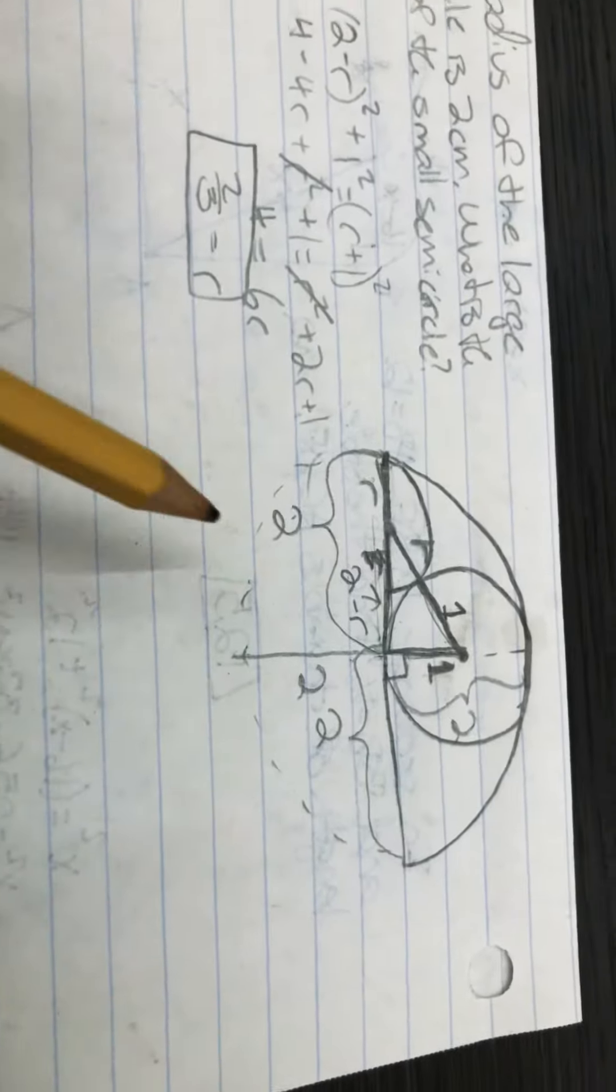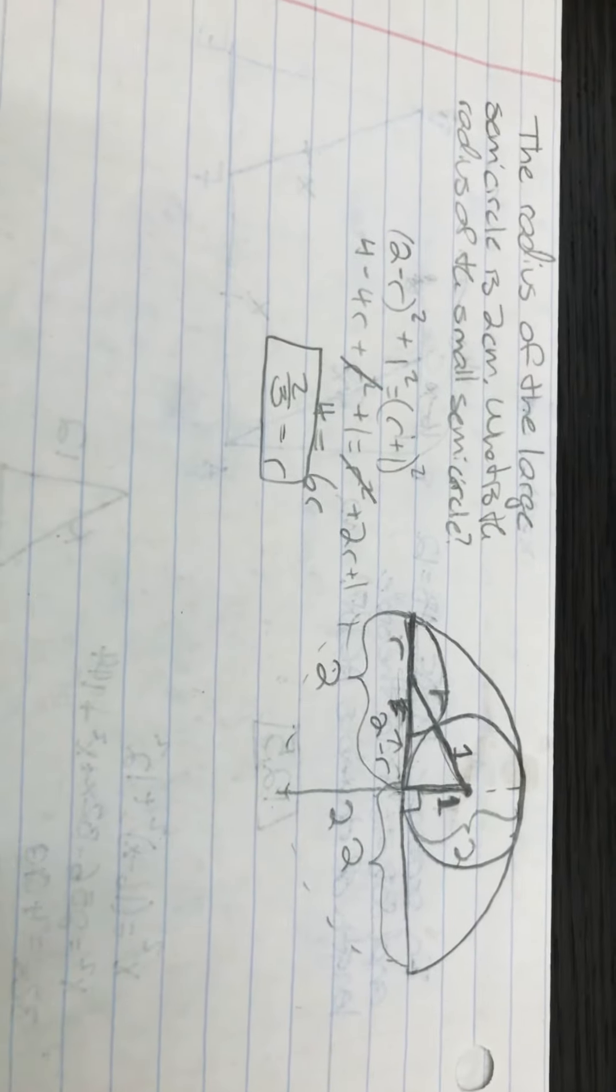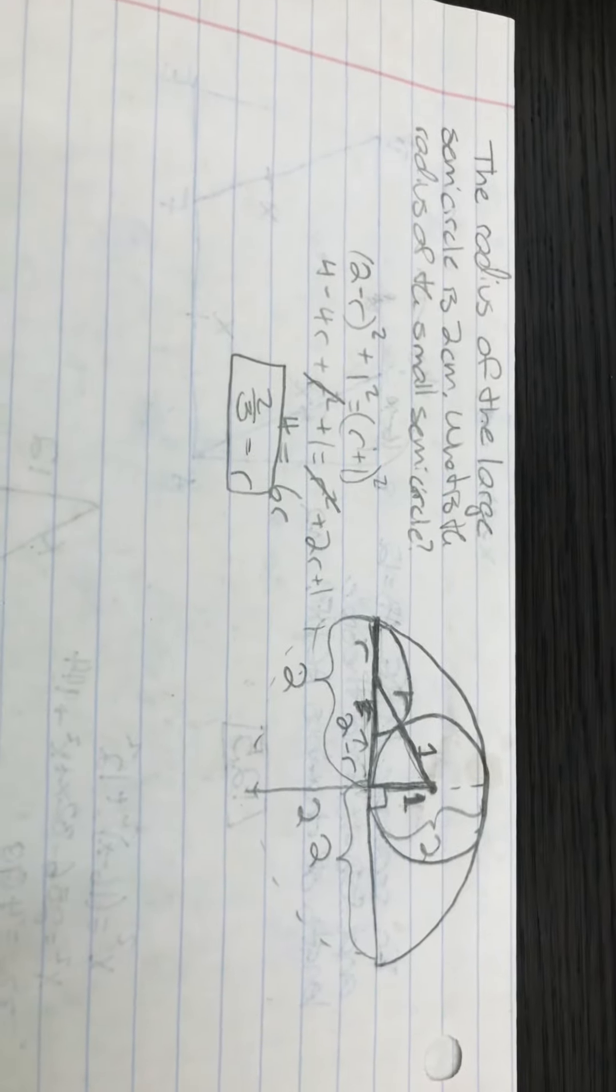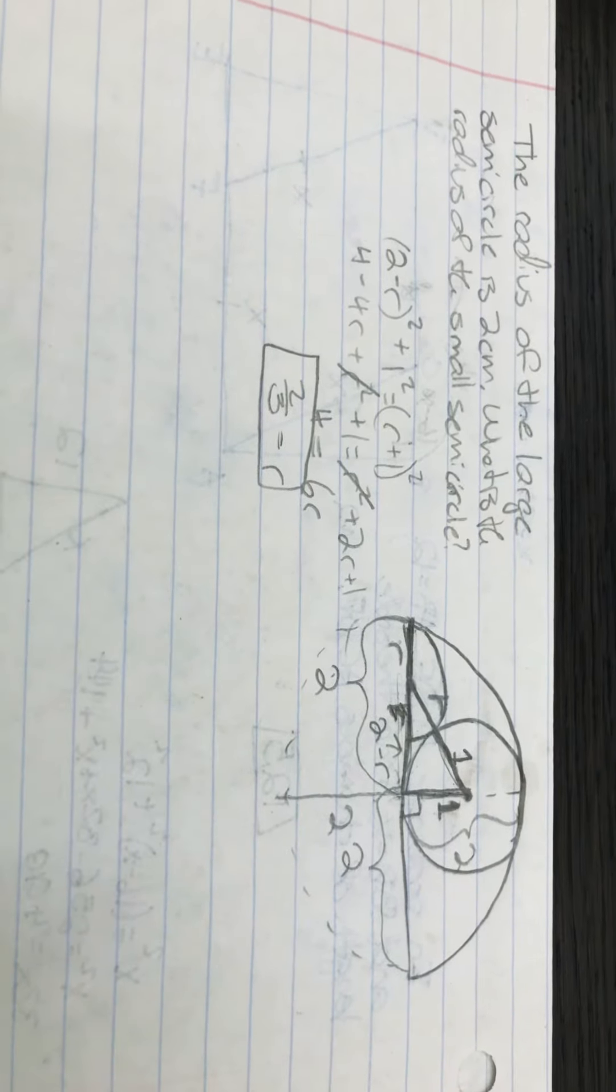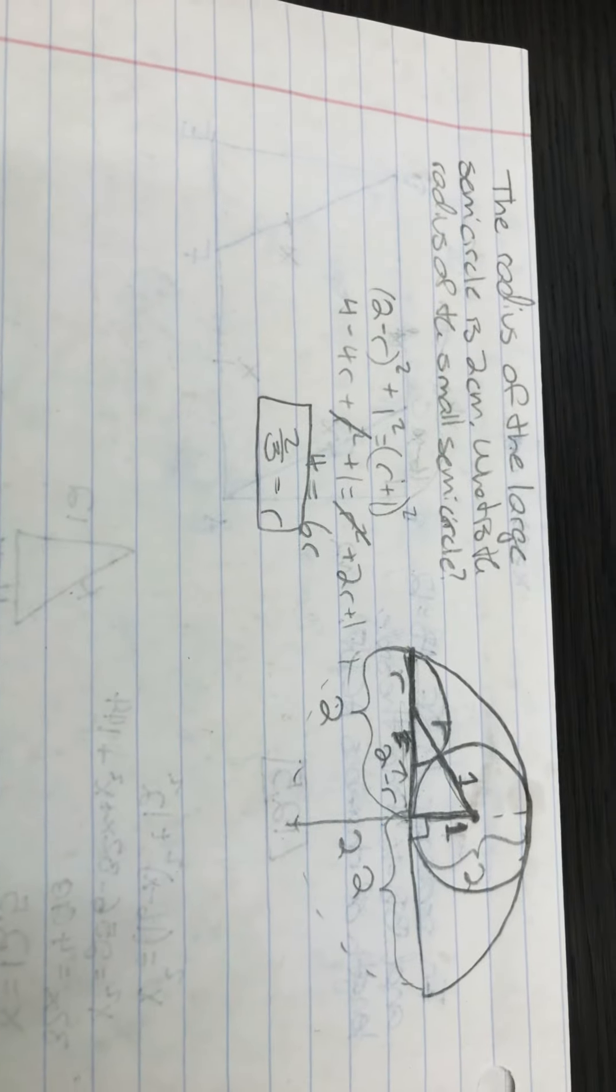And so the trick to this problem is really just finding that relationship over there. You do that by starting off by putting lines together and solving for values that you can find, that way you can get to a value that you don't know. So thank you much for watching and goodbye.